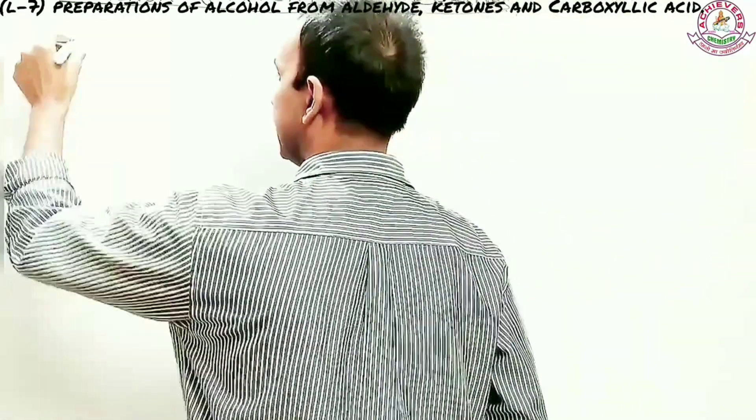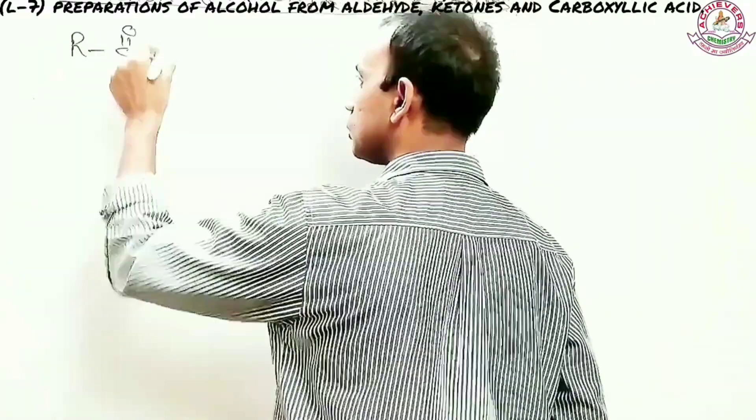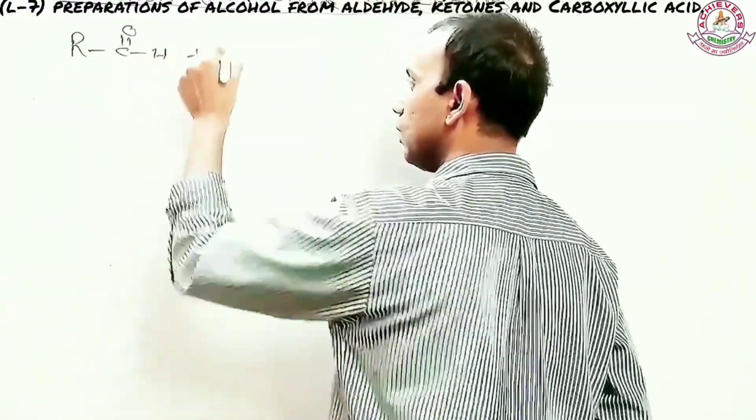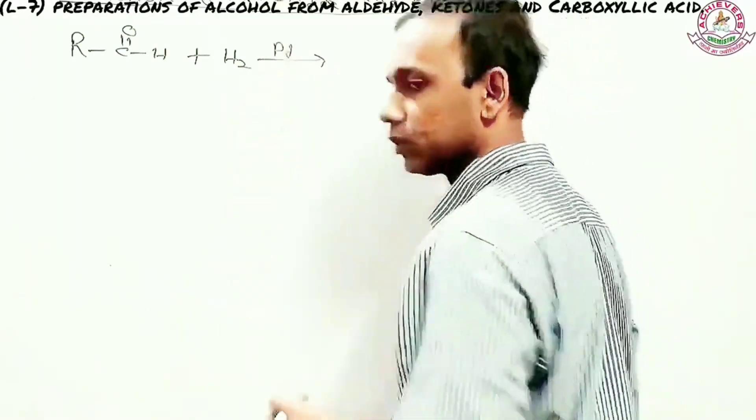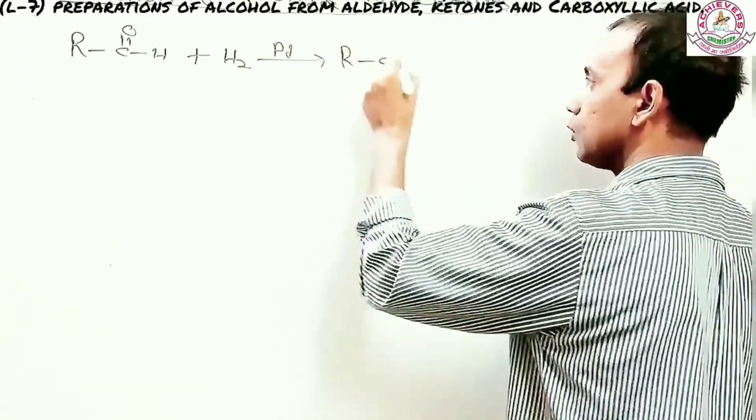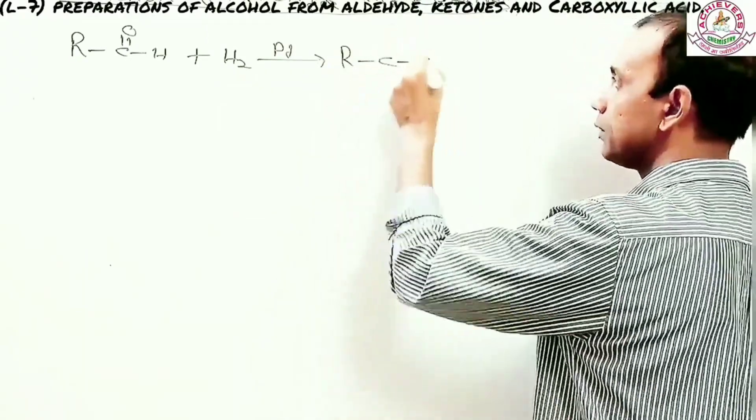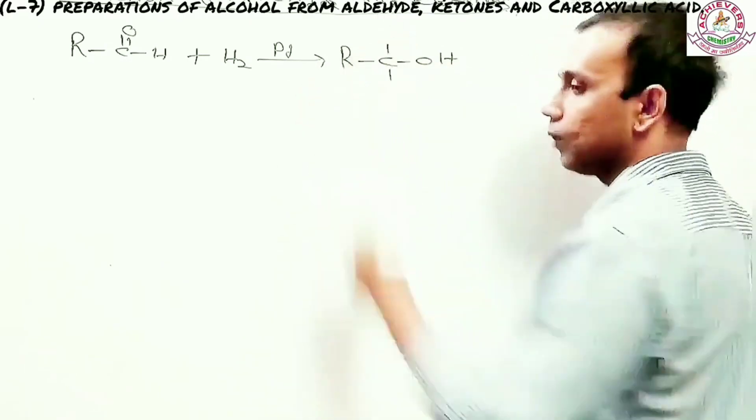First, we take aldehyde. Aldehyde is a common formula. It is this. When you react aldehyde with a catalyst, maybe palladium, platinum, or something, you will reduce it. You will produce alcohol. You will add hydrogen.